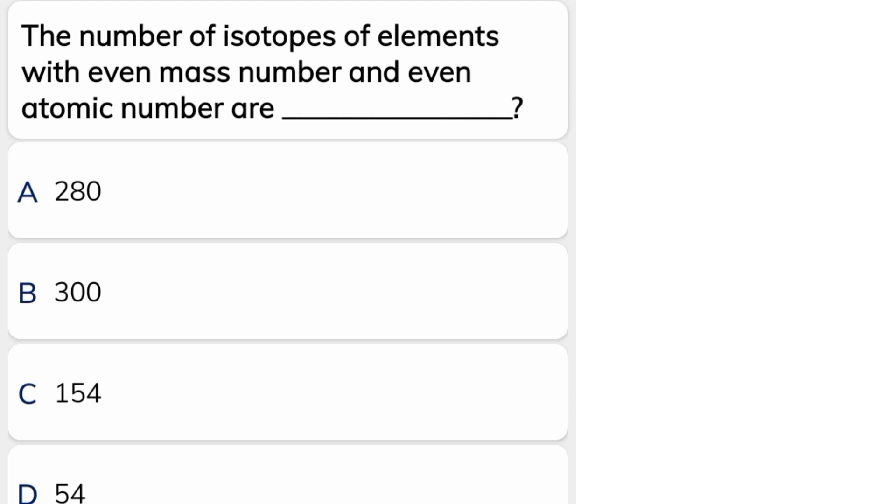The number of isotopes of elements with even mass number and even atomic number are - isotopes which have atomic number and mass number both even are available. Correct answer is C, 154.